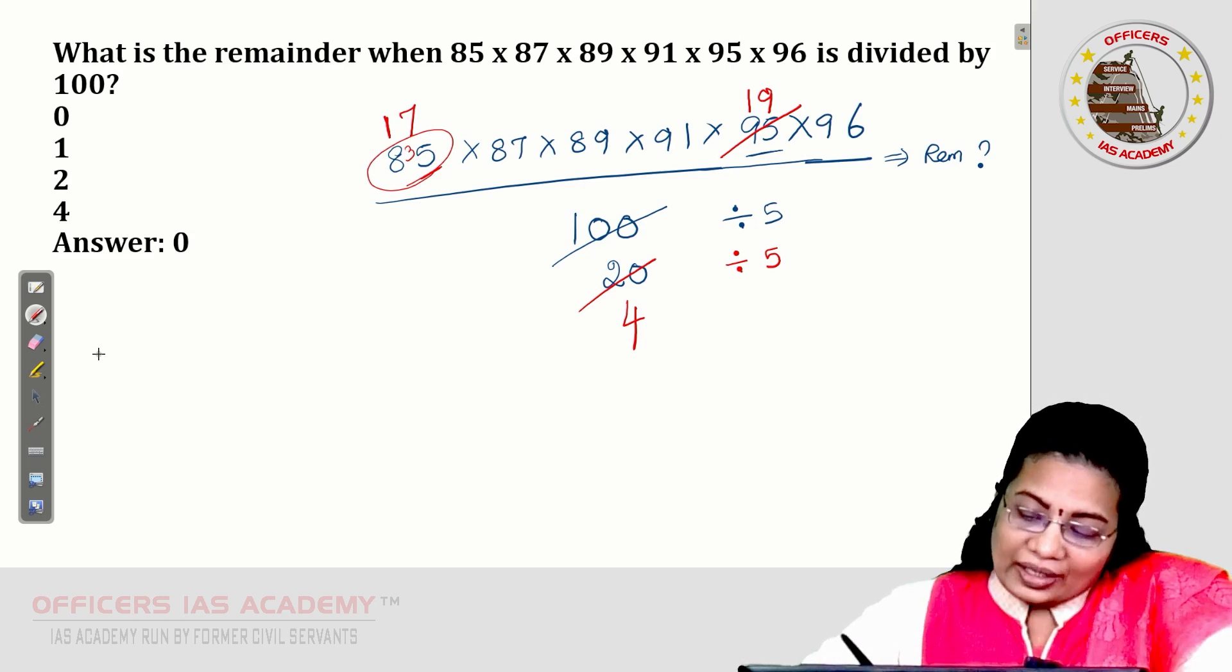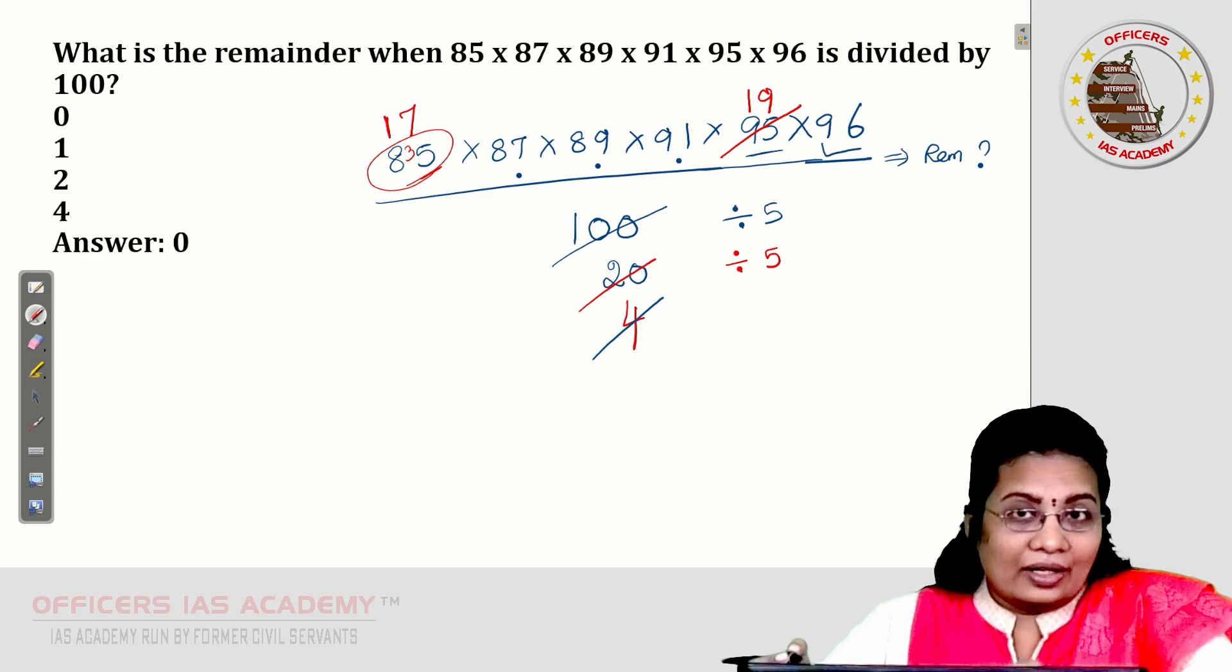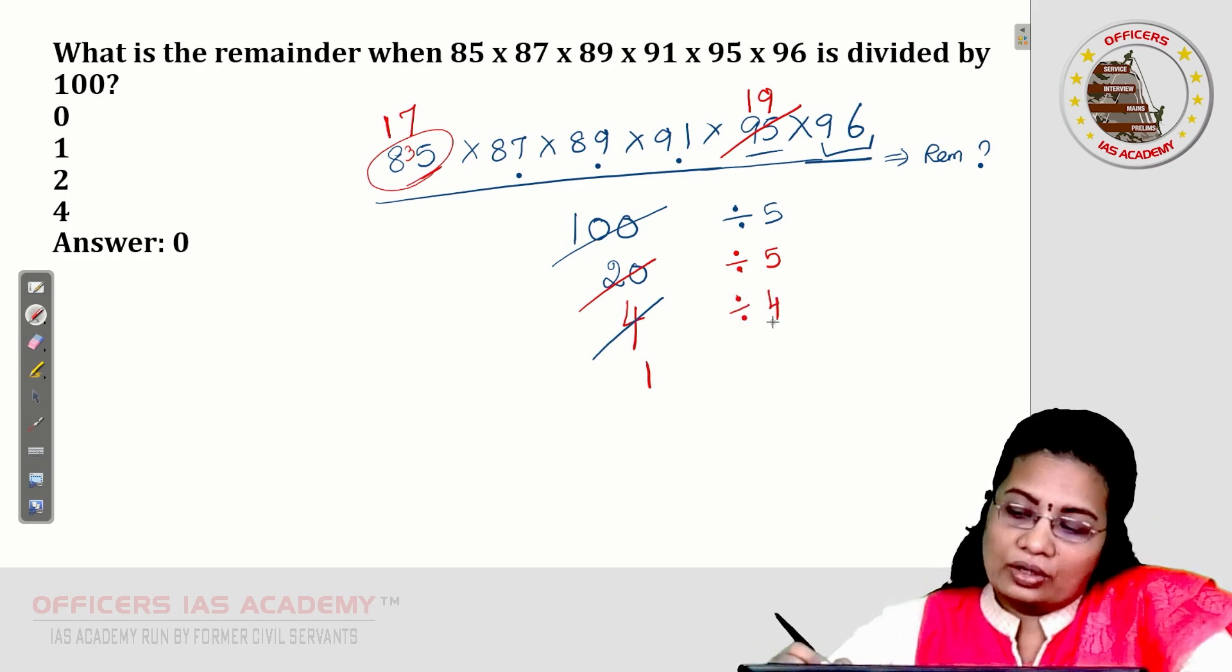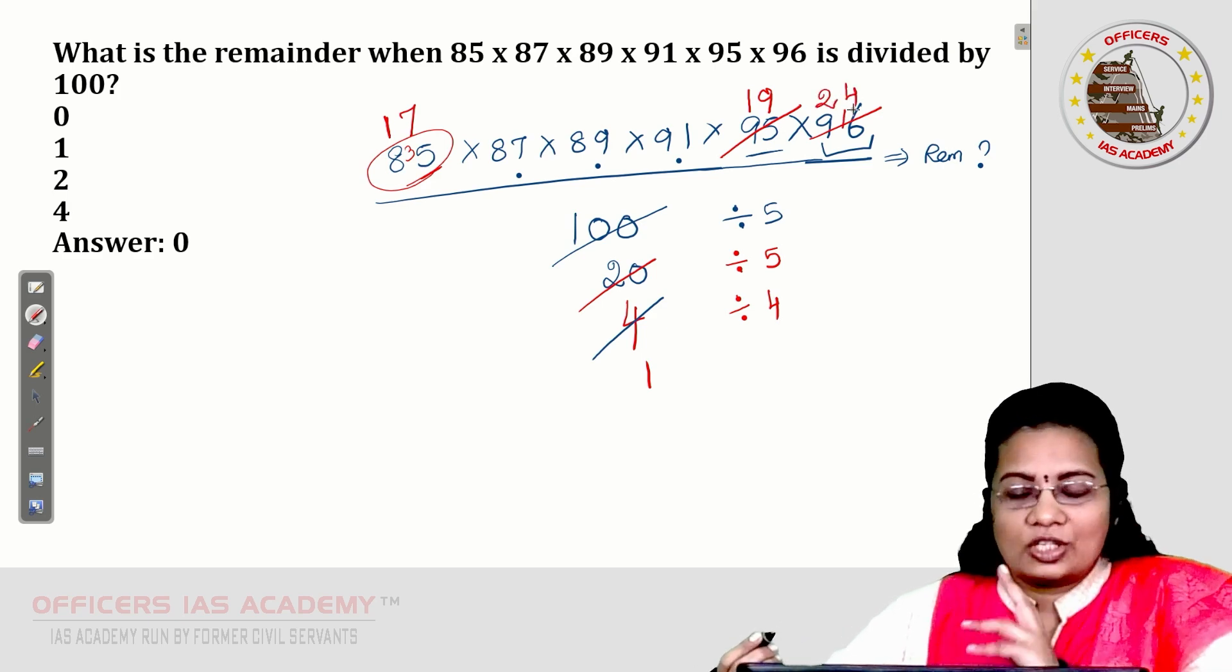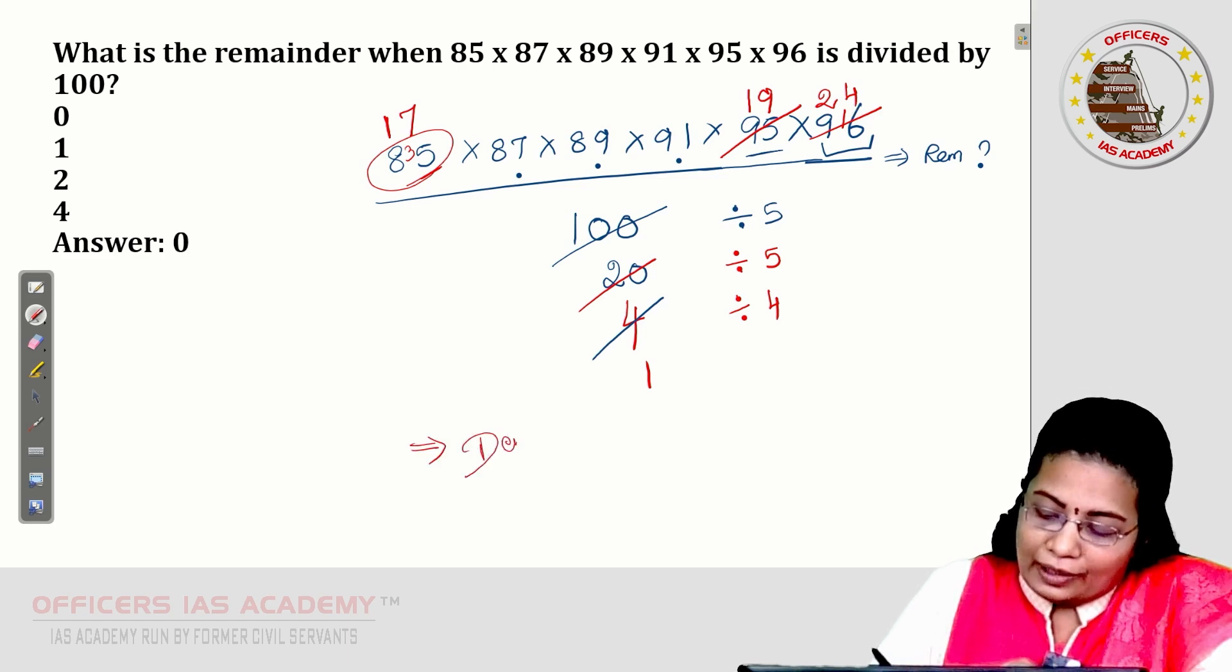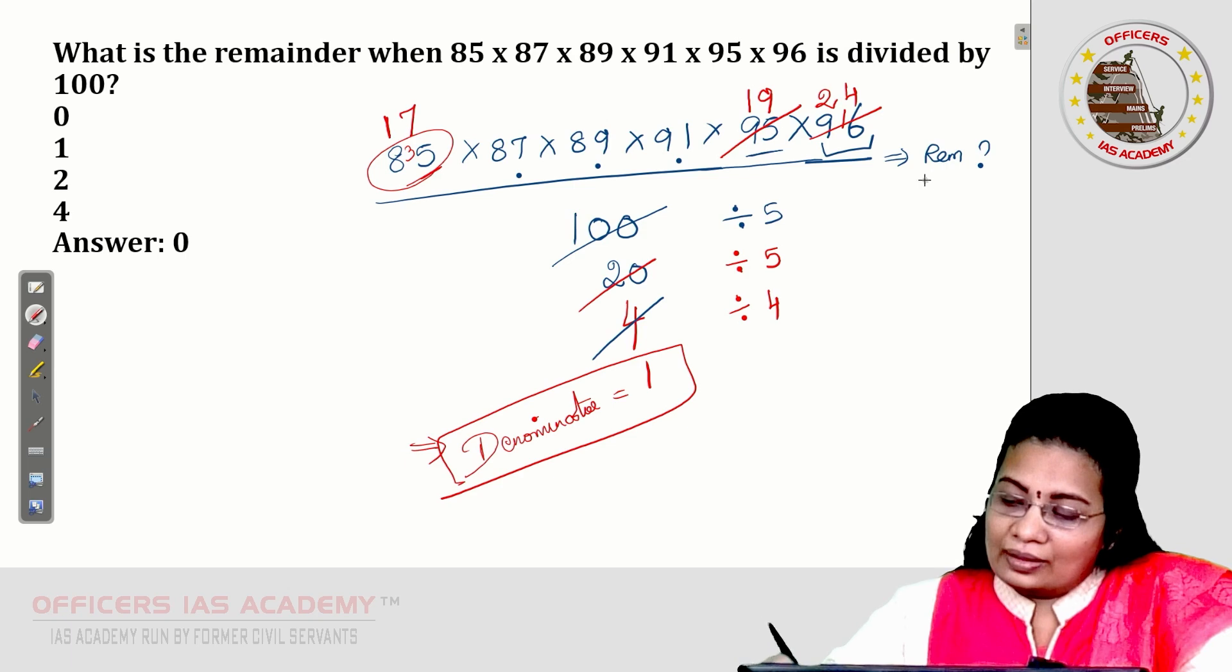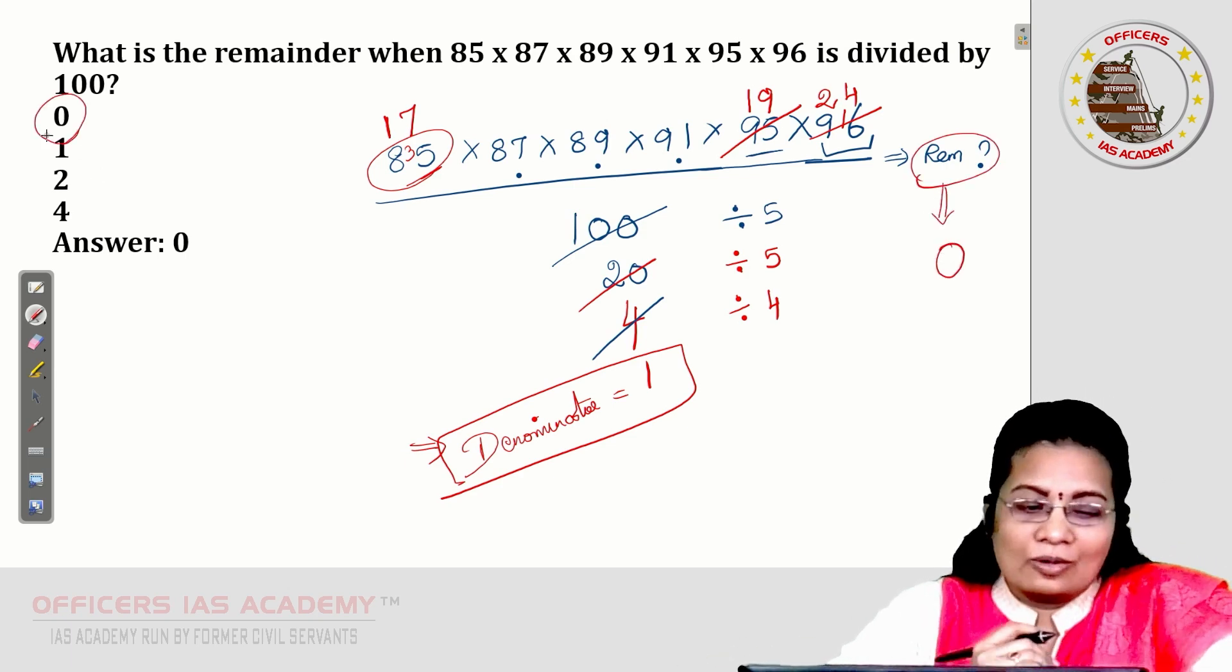Now, I am going to cancel this 4 with any of the number. Which number will help us? Yes, 96 is the even number. It is also divisible by 4. Let us check it. 1 times 4. So, here finally, I have divided with 4. 2 times 4 is 8. Balance 1. 4 times 4 is 16. Finally, what is the idea I get is the denominator. In this case, I got the denominator 1. What is the meaning? Which means the remainder is going to be 0. So, answer, you can choose option A is 0.